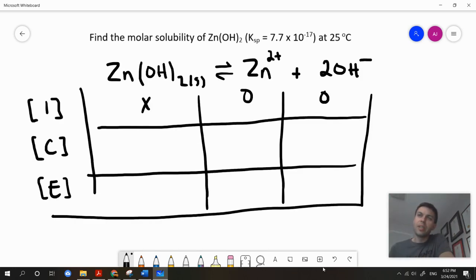This ice table is going to look a little bit different. What I'm going to do here is I'm going to call the amount of solute which I've dissolved x. We're going to use the balanced chemical equation here and we're imagining we're dissolving this ionic compound and we see from the balanced chemical equation that for every x that I dissolve